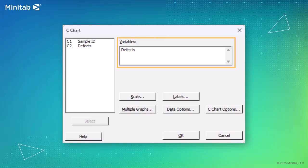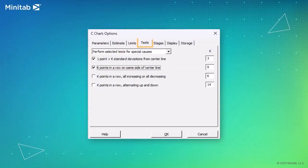In Variables, enter Defects. Select C-chart Options. On the Tests tab, select Test 1 and Test 2.